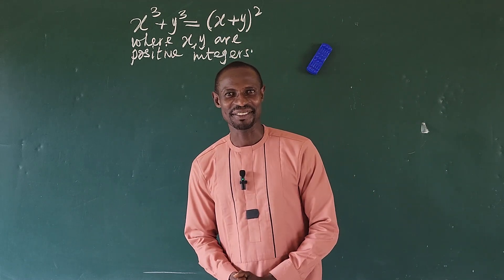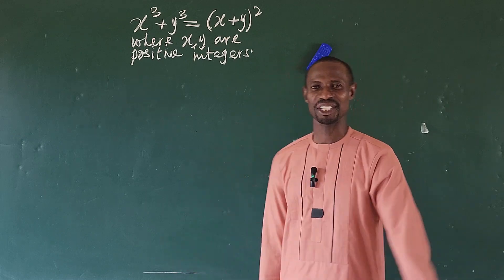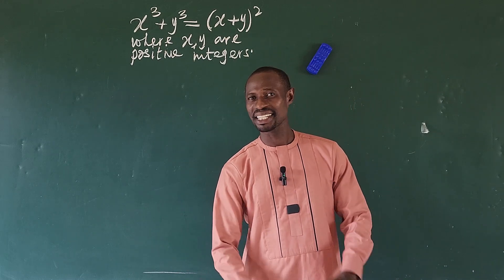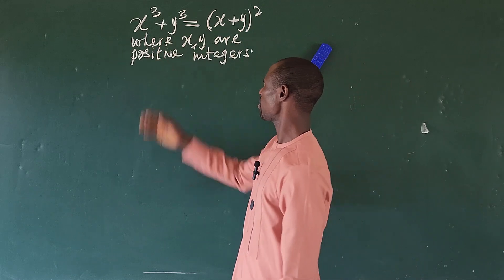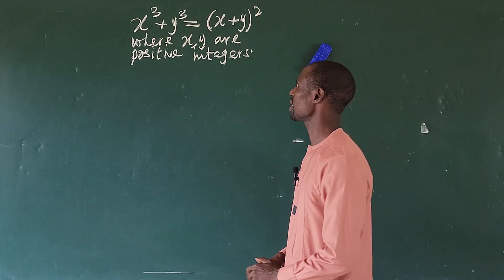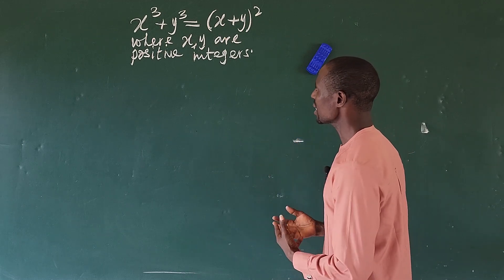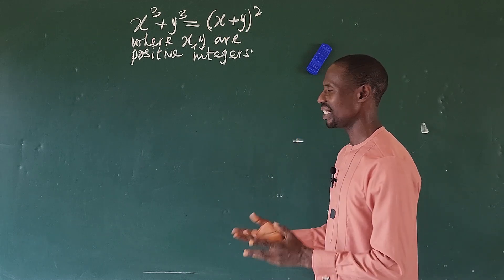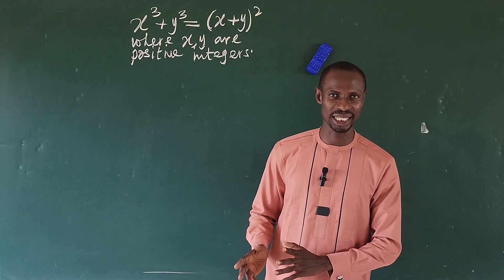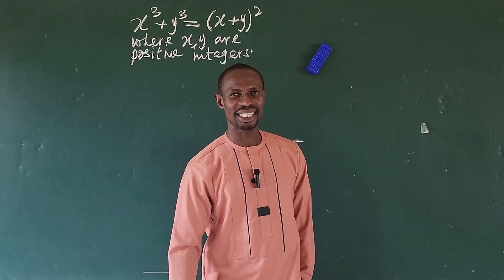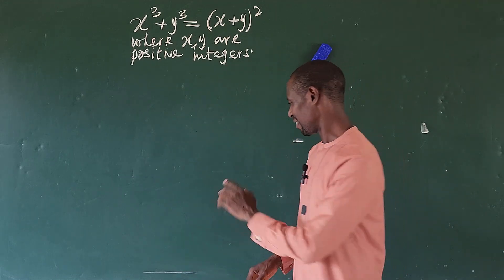Welcome again to today's class. As I promised, I'm going to present a powerful algebraic challenge this time around. The question before us is: x to the power of 3 plus y to the power of 3 equals bracket x plus y close bracket to the power of 2. When x and y are positive integers, we have to find the integer pairs of x and y that satisfy this Math Olympiad challenge.